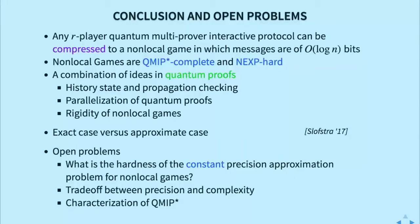For open problems, now we know the hardness of nonlocal games to inverse poly approximation. So the question is, what hardness for constant precision approximation? As we've told you, the trade-off between complexity and precision might be different in the quantum setting. So what are exactly the trade-offs? To completely resolve the hardness of these nonlocal games, we have to understand what is the hardness of QMIP*. Currently, we don't have any upper bound on that. Thank you.